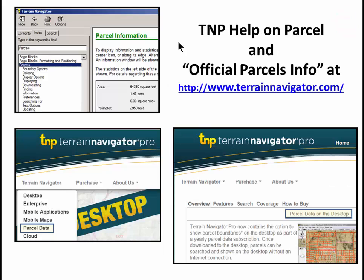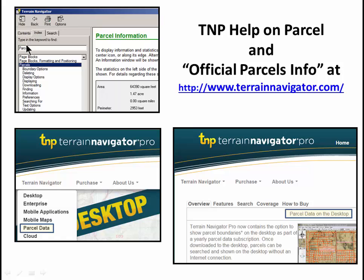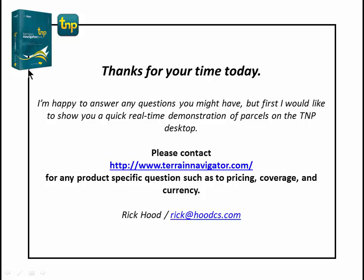Going to TerrainNavigator.com gets you information on Terrain Navigator. Scroll down to Parcels and I really recommend you look at the coverage and see the coverage for your state and the extent of that coverage. You can always call and contact Terrain Navigator for more detailed information on what is and what isn't covered. But even before you do that, when you're using TNP itself, go to the Help menu, choose Content, and then select Parcels. You'll have all this information which goes into what I've covered in greater depth. Thanks for your time. Feel free to contact me directly. The official word is at TerrainNavigator.com.